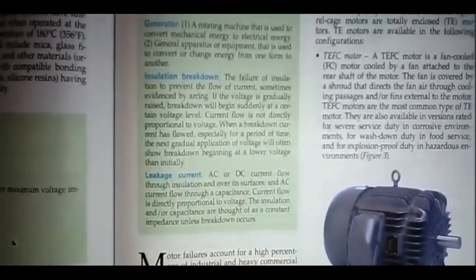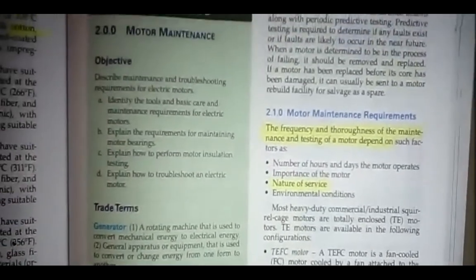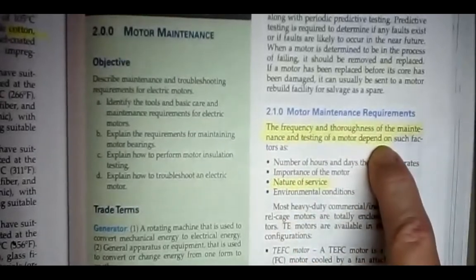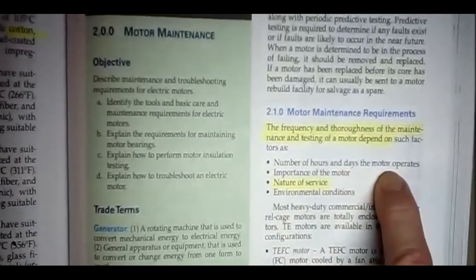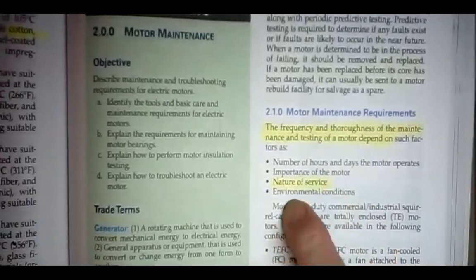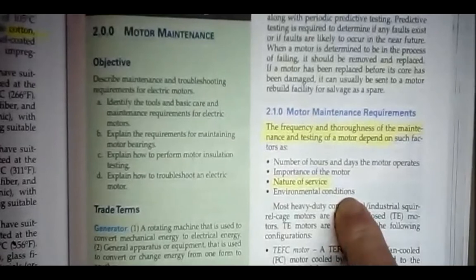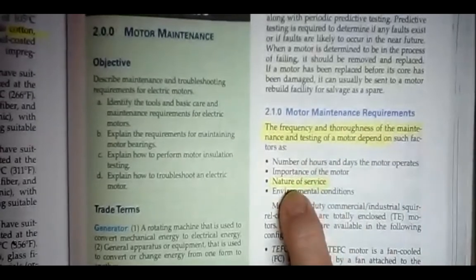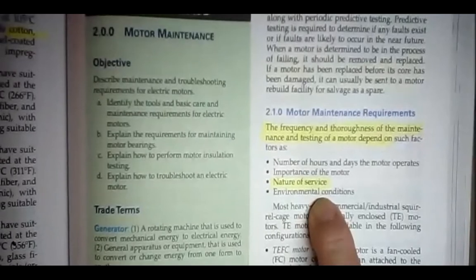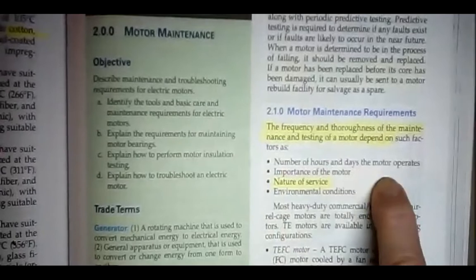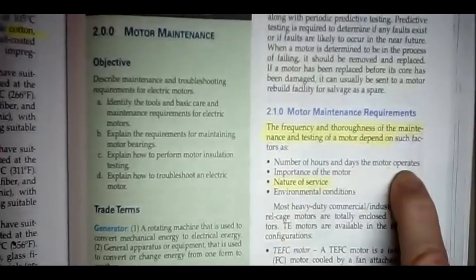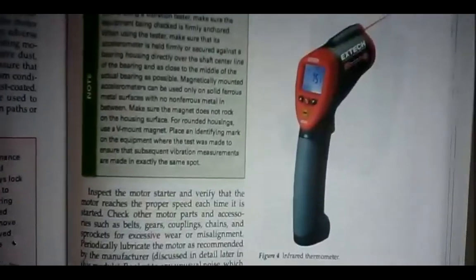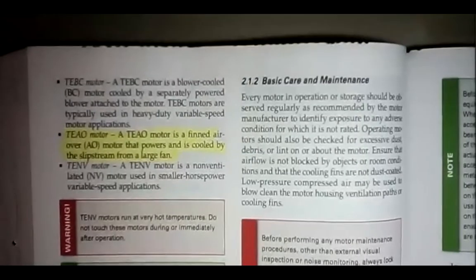And then leakage current. Here on the right-hand column of page 7, motor maintenance requirements, the frequency and thoroughness of maintenance and testing of a motor depend on such factors as the number of hours and days the motor operates, the importance of the motor, the nature of the service, the environmental conditions. These are all things that go into motor maintenance, how often are we going to do maintenance once every three months or once every week? Well, if it's a very dusty environment, if it's crushing rock, if it's important because it's supplying water to a municipality, these are things that are going to go into the maintenance schedule. These are things that we're going to take into consideration for how often do we service that motor.